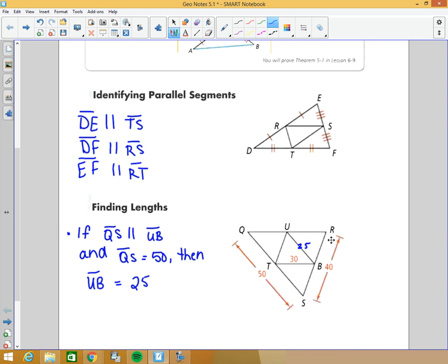If I look at this one, RS is 40, UT is going to be its parallel midsegment, so it's going to be half of 40, which is 20.